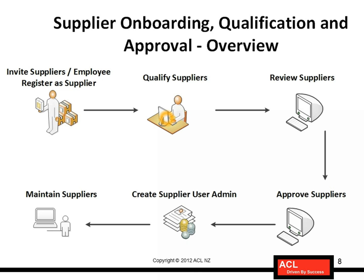Once the supplier qualification process is complete, all the information the supplier has provided, coupled with the qualification criteria, undergoes a final review by the supplier management team. Based on that review, the supplier gets approved or rejected. Once a supplier gets approved, Oracle provides a facility for people in the procurement department to act further.